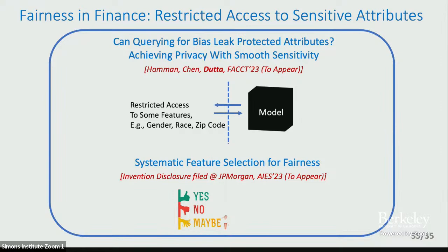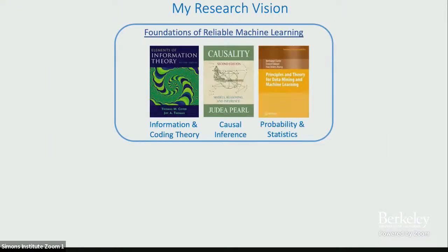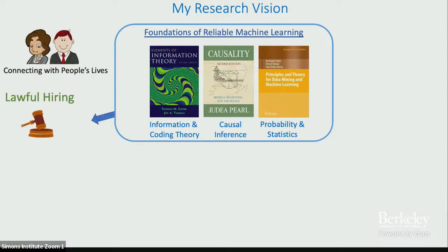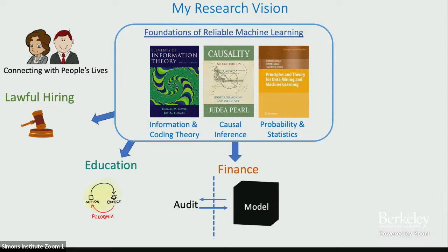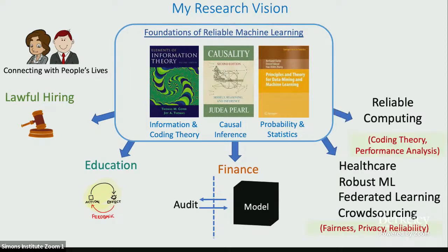But there is a lot more to do at the intersection of fairness and explainability. My research vision is to build the foundations of reliable machine learning using techniques from information and coding theory, causality, probability and statistics, and then connecting it to applications that directly influence people's lives like hiring, education, and finance. Thank you so much.